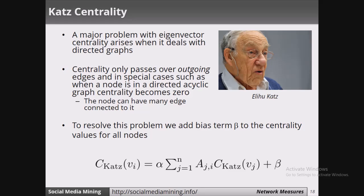Next we will move to Katz centrality. The major problem with eigenvector centrality is when it deals with directed graphs. The centrality is only passed through outgoing edges — only when there are outgoing edges is centrality passed to neighbors. In some special cases, when a node is in a directed acyclic graph, centrality becomes 0 even though many edges are connected to it. This problem has to be handled, and it is handled by Katz centrality.